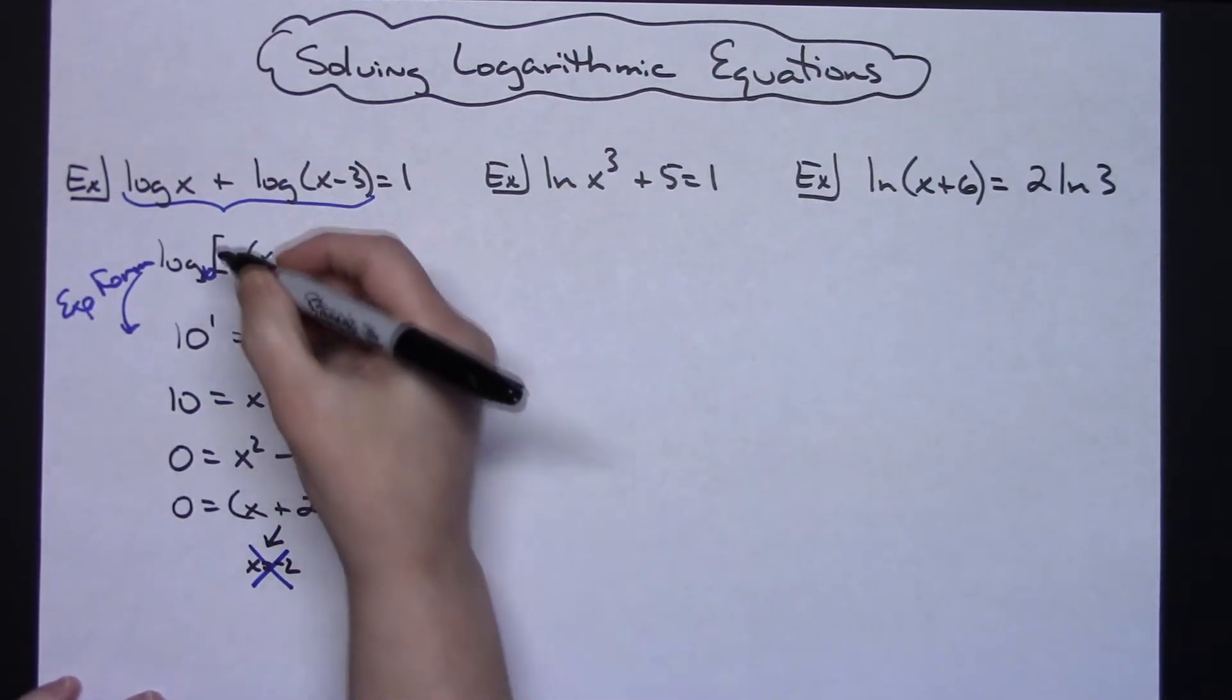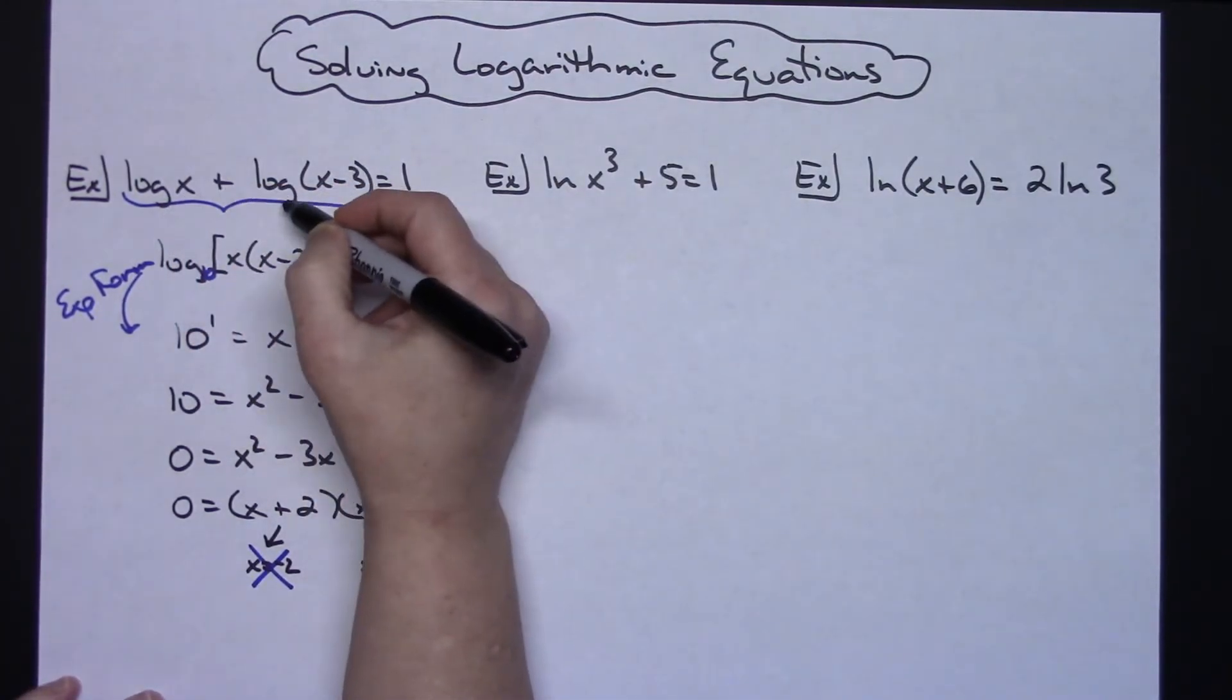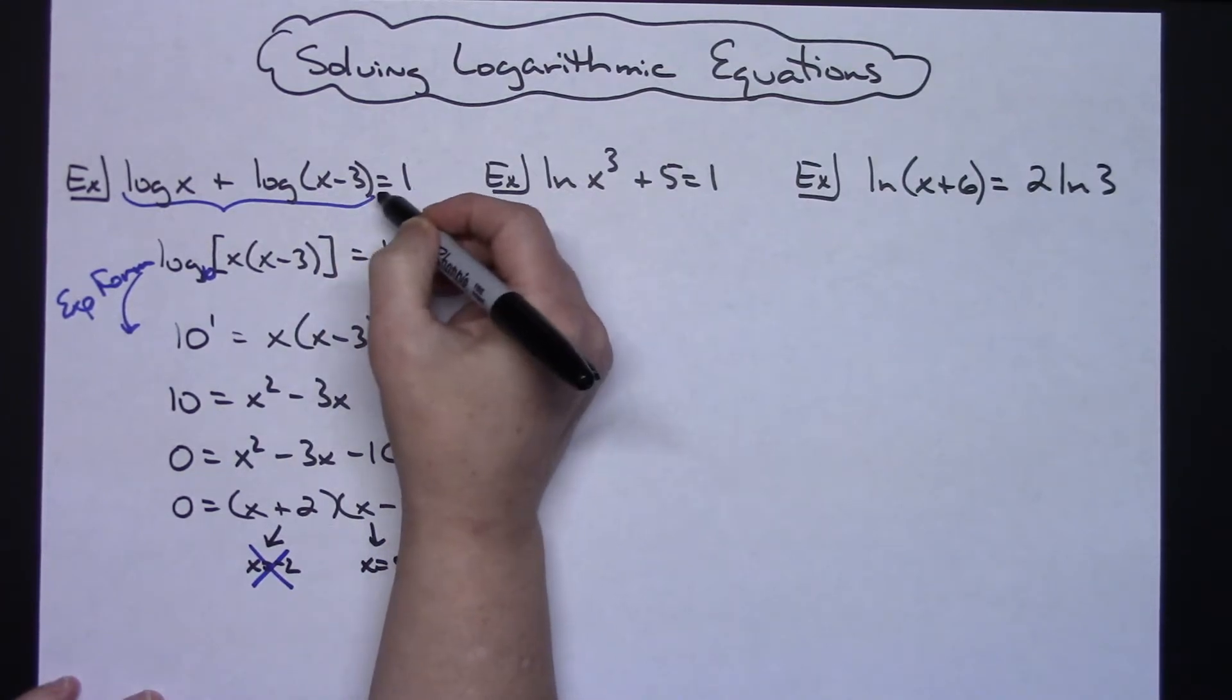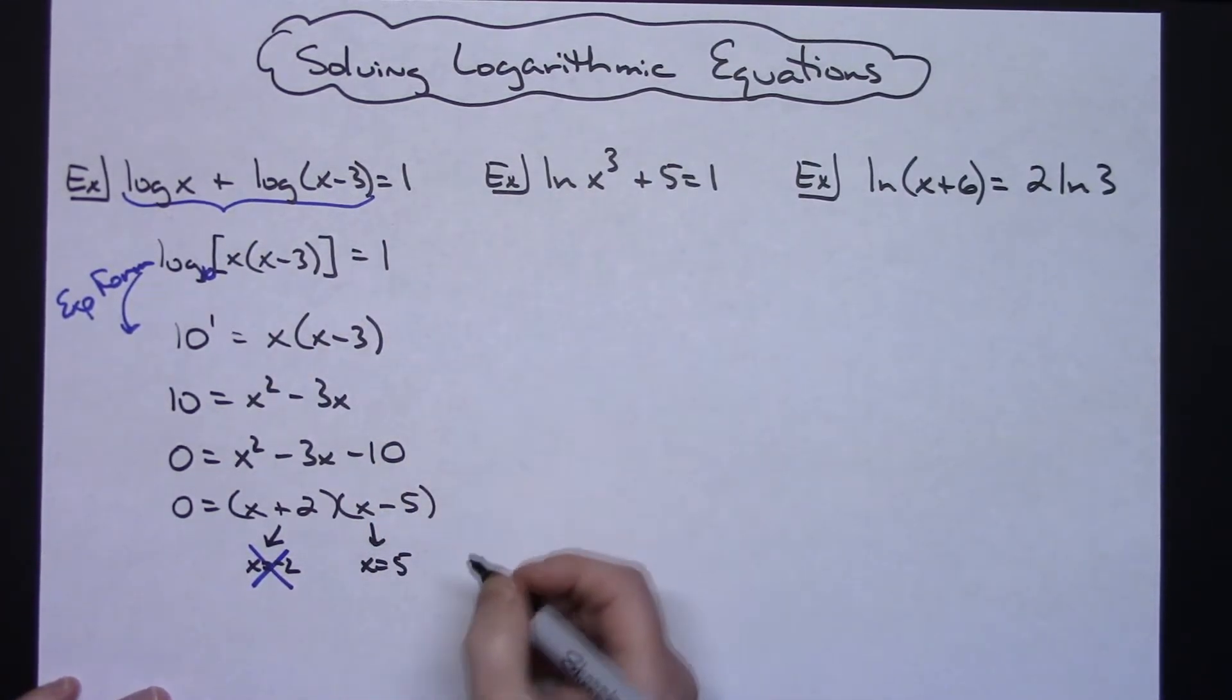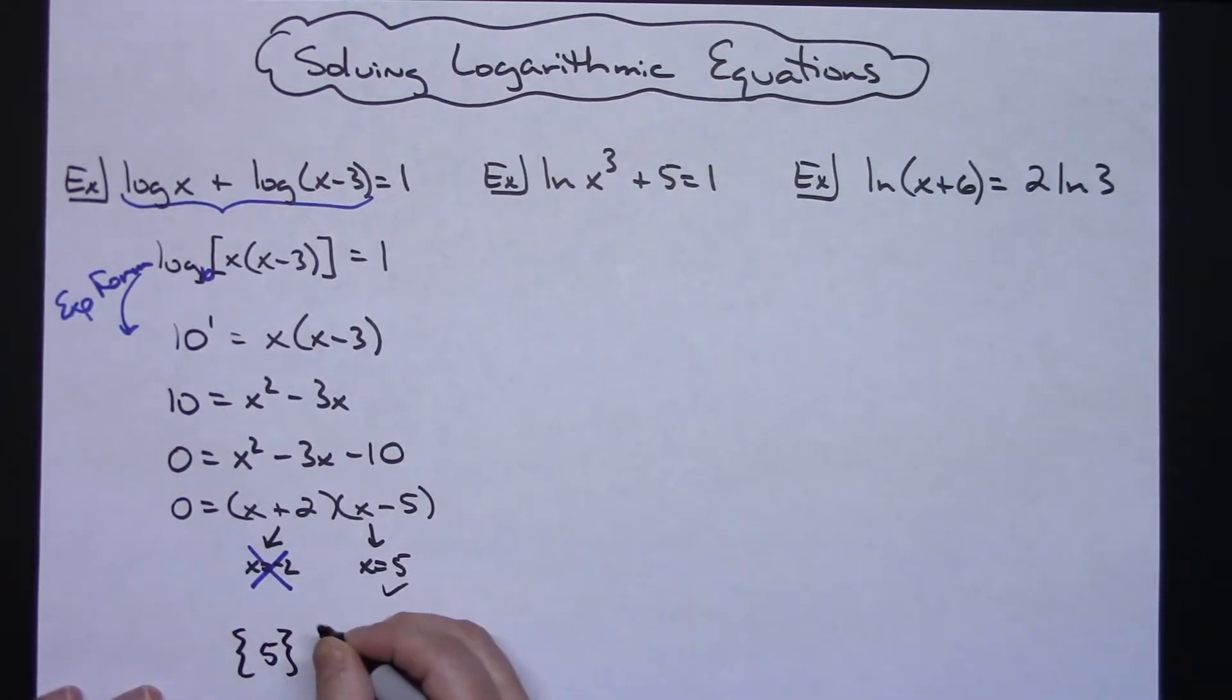So I get to immediately throw that out. I don't even have to do the rest of the check. Plugging this in I would have the log of 5 plus the log of 2, and then does that equal 1? You could use a calculator to do a quick check there to verify that yes it does. So I would have a solution set of just 5.